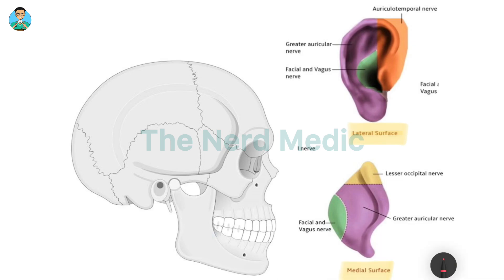For this video, let's consider the lateral surface to be the anterior surface, because logically, whenever you look at a person from their anterior perspective, this is the surface you see. This particular surface remains posterior. So for the sake of this video, the lateral surface is considered anterior and the medial surface is considered posterior.